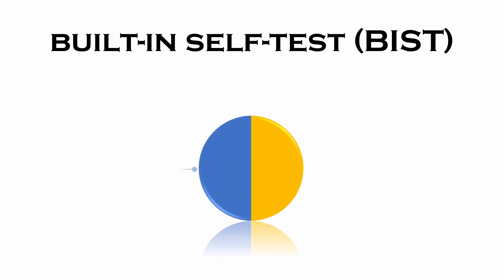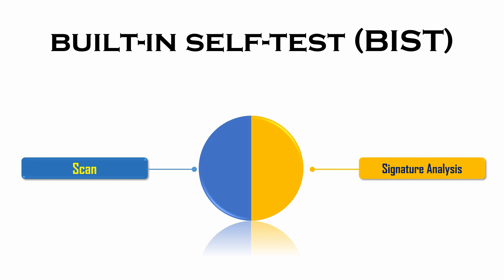Built-in self-test is a combinational testing technique that combines scan-based testing and signature analysis. In scan-based testing, a series of flip-flops are connected serially to form a chain that covers the entire logic blocks. Signature analysis provides a simple and easy way of finding faults in logic boards by utilizing known patterns or signatures on a data line.